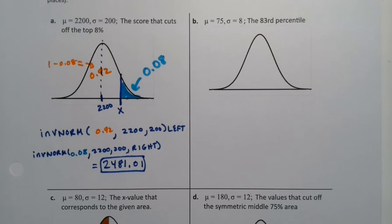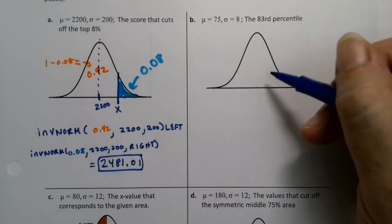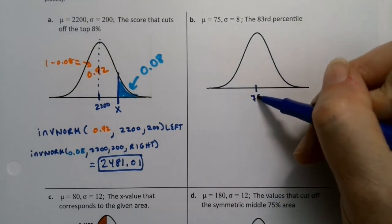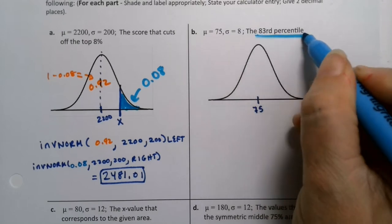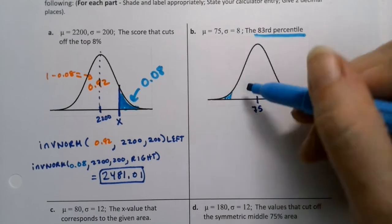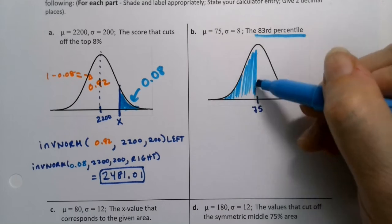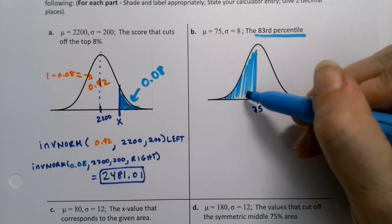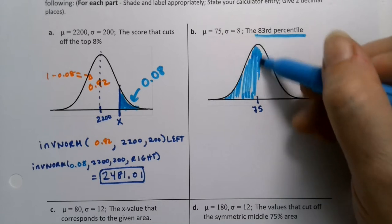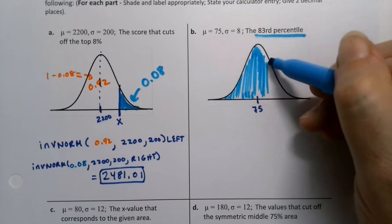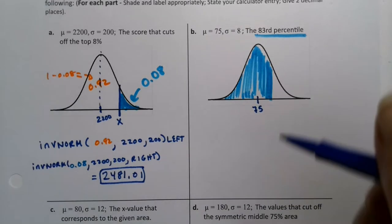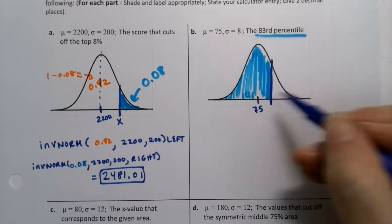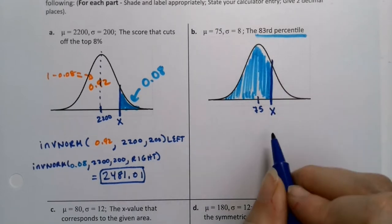There you have it. It's set on the page to give two decimal places, so we'll say it's 2,481.01. Either one of these methods, any one of the three actually will work. You choose whatever is comfortable for you. All right. Now, what about if the mean is 75, and then they want us to find the 83rd percentile? Let's think about that for a second. If you're in the 83rd percentile, that means that 83% of the people are below you.